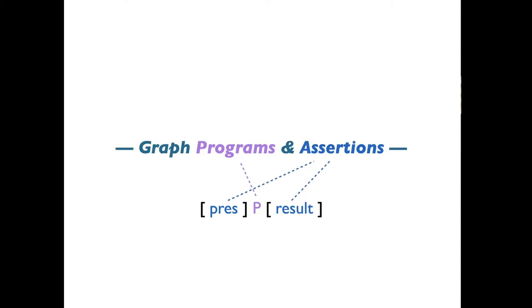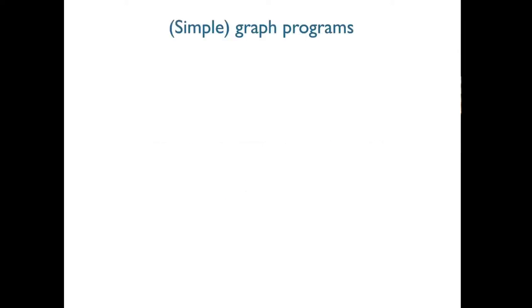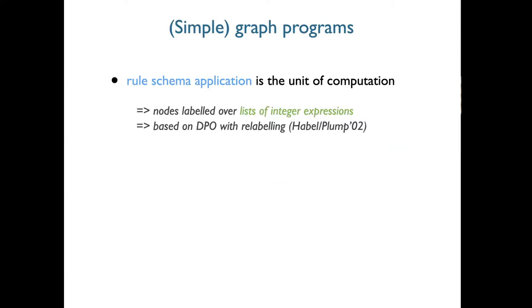If you've been to GCM or ICGT in the past, you'll have heard about languages like GP2, the recipes of GROOVE, and many other approaches to programmatically manipulating graphs. The language I use in this paper is quite rudimentary — simpler than those full-fledged practical graph programming languages — just to keep the paper self-contained, focusing on incorrectness reasoning itself. Our unit of computation is the rule schema application. Our nodes are labeled over lists of expressions; we simplify by limiting them to integer expressions only. Semantically, rule applications are based on DPO with relabeling.